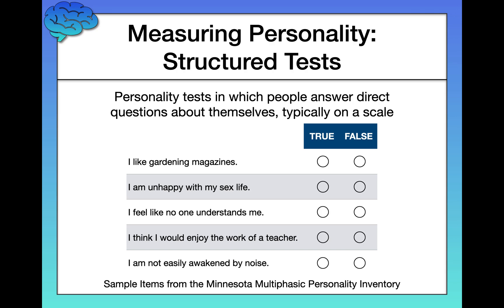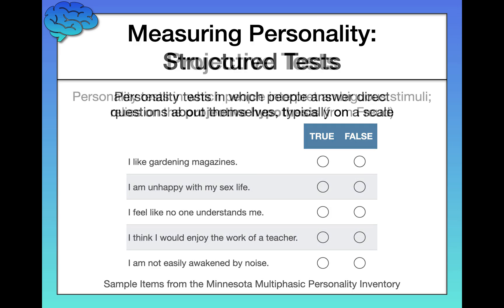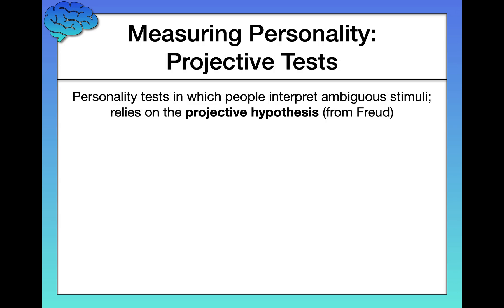There's a lot we can get from structured tests such as the Big Five inventory and the MMPI. Projective personality tests, however, are a bit different. Projective tests are personality tests in which people interpret ambiguous stimuli, and they rely on the projective hypothesis taken basically from Sigmund Freud — the idea that people will project their personality onto ambiguous stimuli.